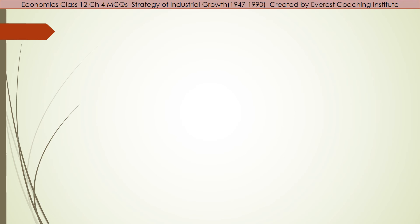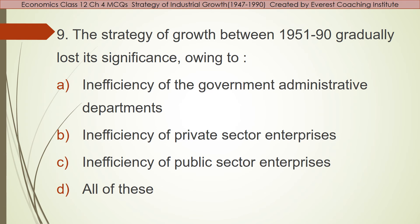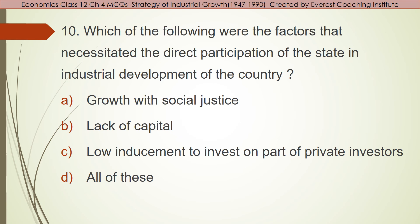Question number nine: Strategy of growth between 1951 to 1990 gradually lost its significance owing to — inefficiency of government administrative departments, inefficiency of private sector enterprises, inefficiency of public sector enterprises, or all of these. Note: 90% of students will choose 'all of these' — but that is wrong. Since 1951–1990 focused primarily on the public sector, it was the inefficiency of public sector enterprises that caused the strategy to lose significance. The answer is option C.